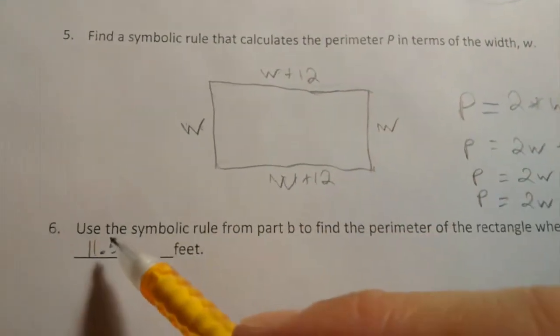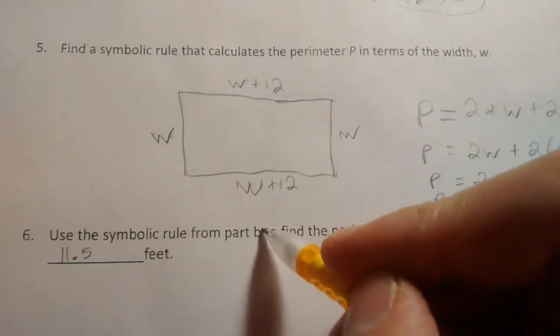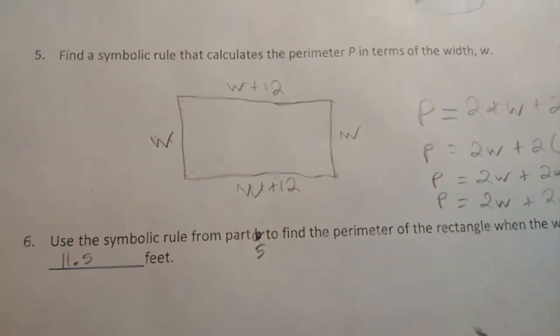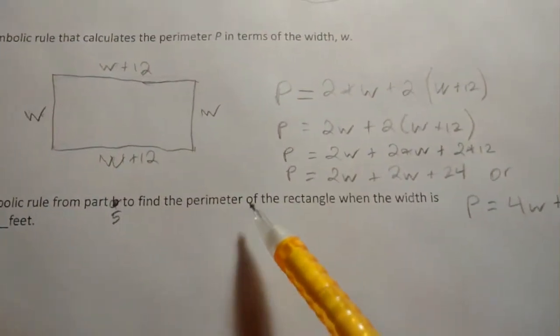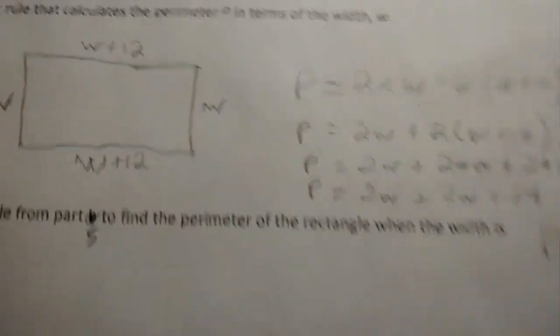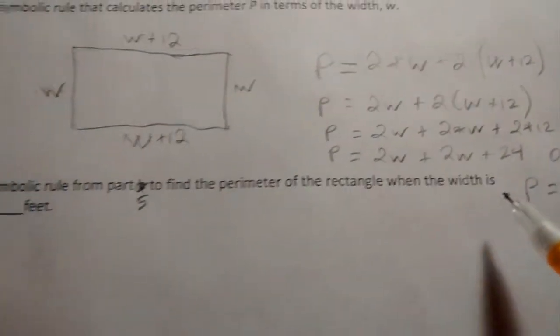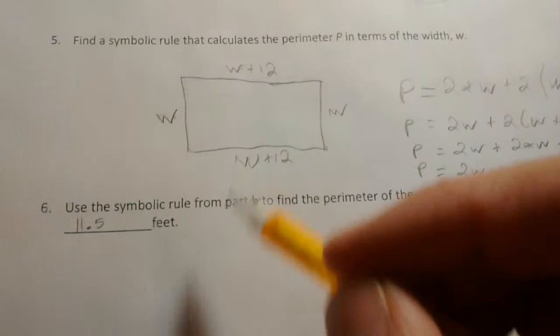Alright, let's look at this next one. Use the symbolic rule from part five to find the perimeter of the rectangle when the width is 11.5 feet.